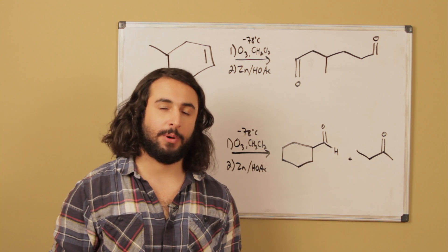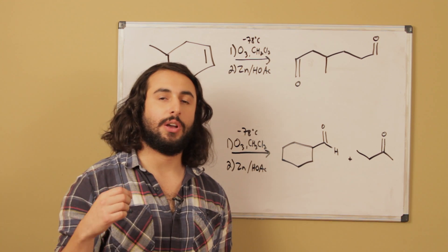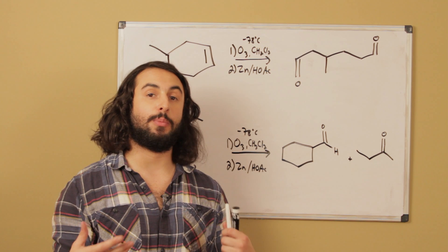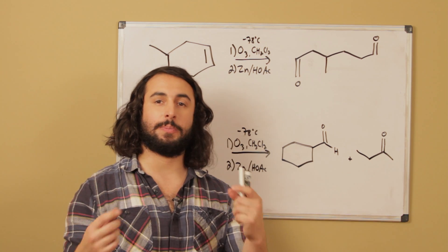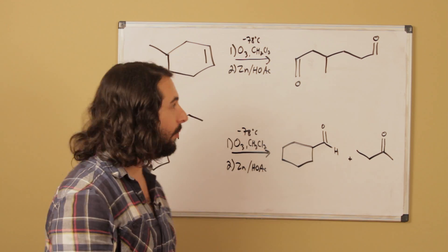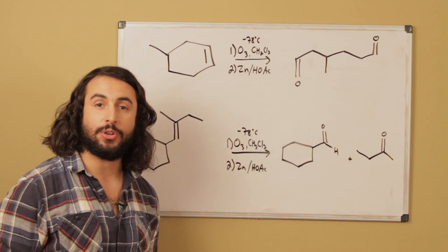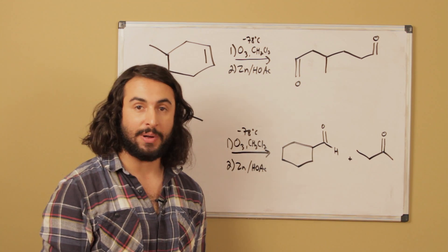The thing that we want to remember about ozonolysis is that ozonolysis will cleave double bonds and replace each carbon that was participating in the double bond with a carbonyl. So when we're doing ozonolysis in the forward direction, we have to identify any double bonds.